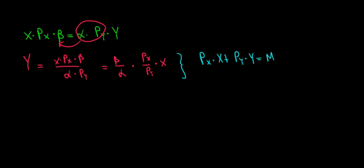Let's substitute. We have price of x multiplied with x, we keep that as it is. Price of x times x plus price of y times, we substitute for y this entire relationship. So we have beta over alpha multiplied with price of x divided by price of y times x equals to m.